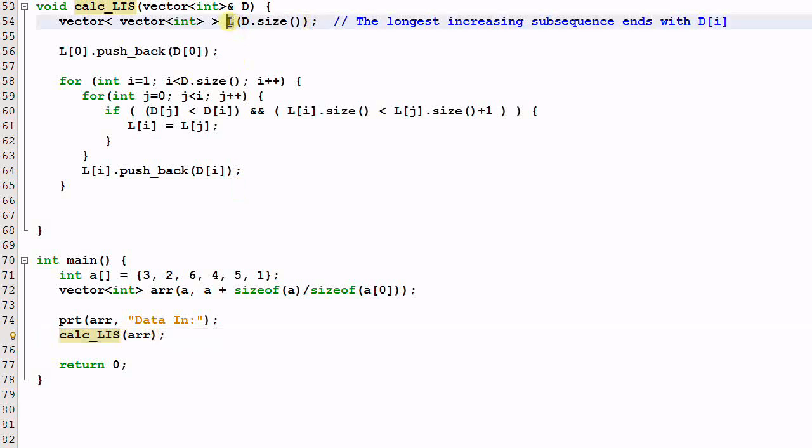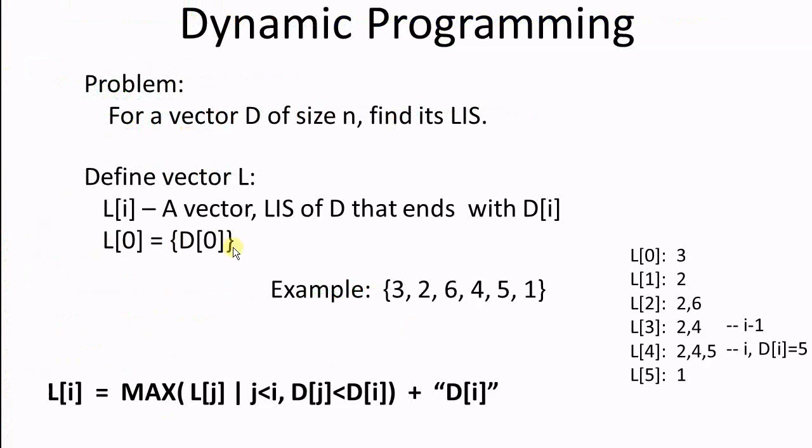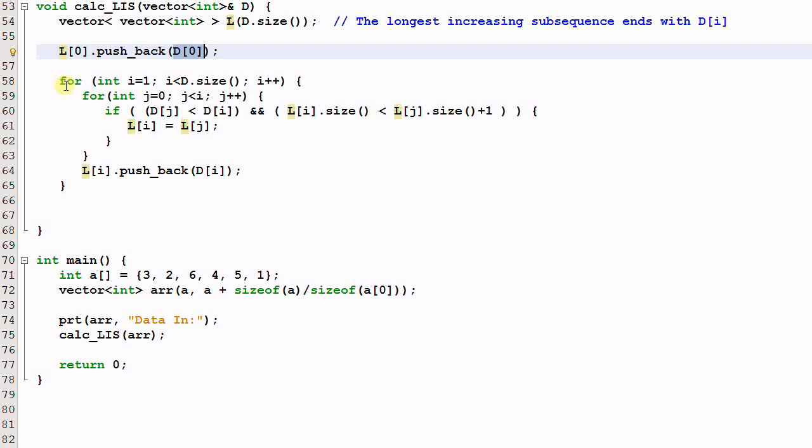First, we create l, and l is the same size as the input data d. And then we initialize l0 to be d0. That is the initial condition we have talked about, about l. And then we start the loop to find every entry of l. Since we already have l0, so our loop will start with 1. i will start with 1.